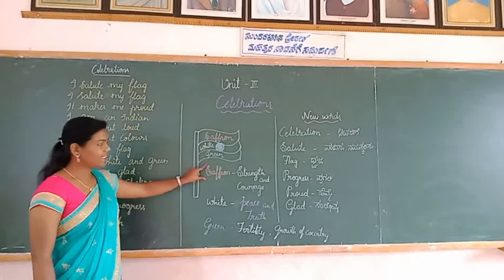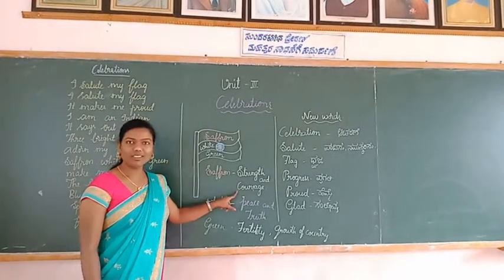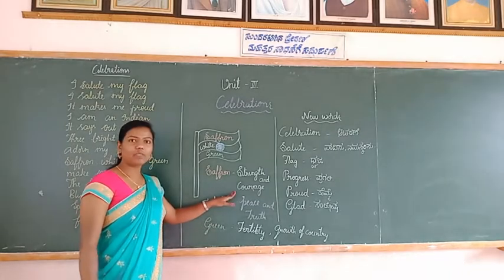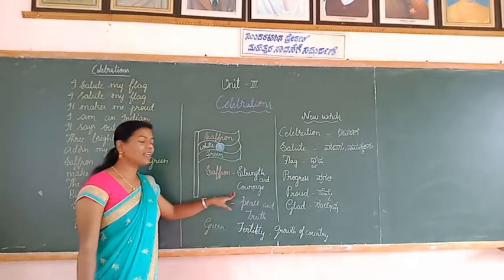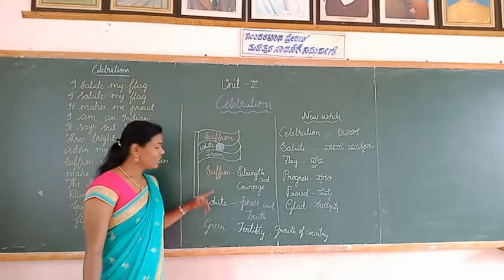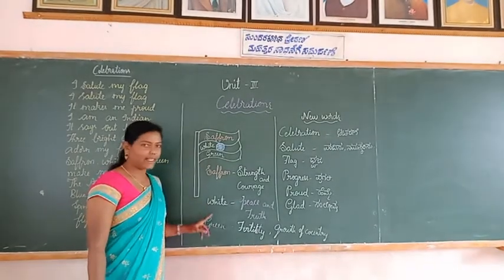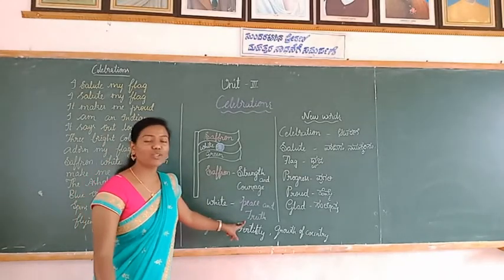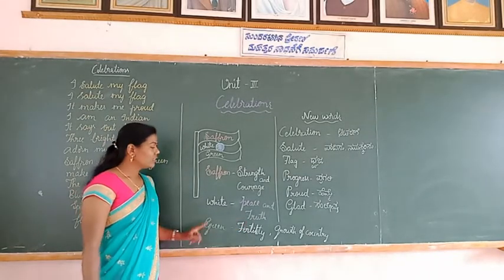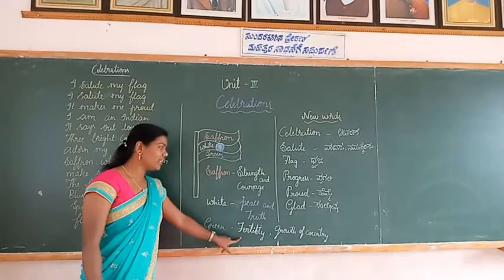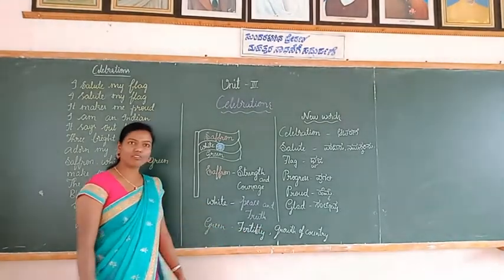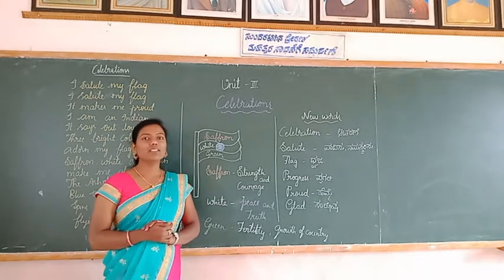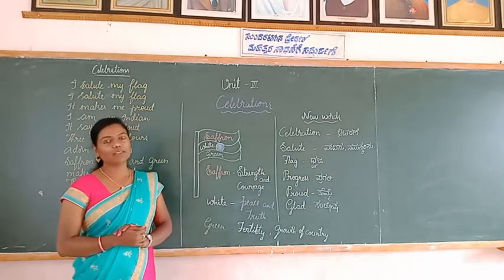The saffron color indicates strength and courage of our country. Strength means power, shakti. Courage means braveness, bahidriya. The white color indicates peace and truth — peace means shanti, truth means satya. The green color indicates fertility and growth of our land — fertility means falamad kate, growth means balamad kate.